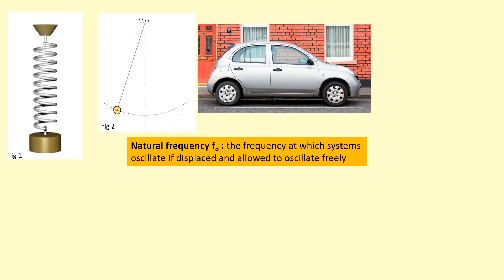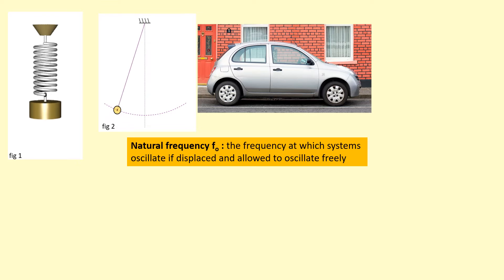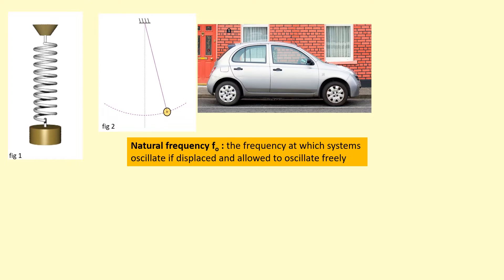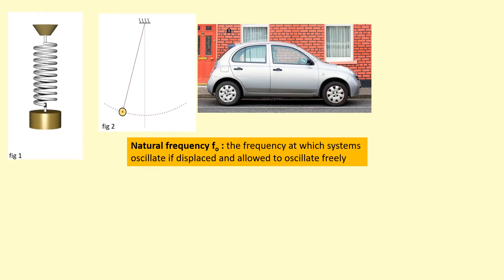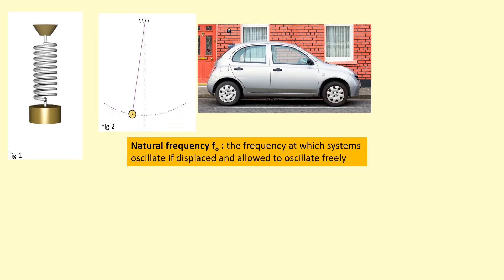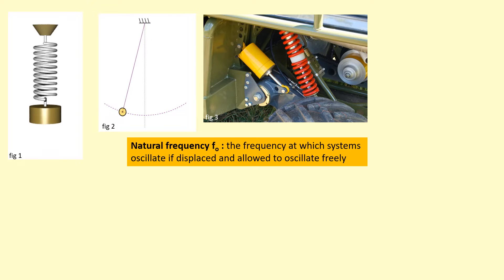So everything has a natural frequency at which it oscillates. For example, this car — if I come along and I push this car, it will oscillate up and down at some natural frequency, and that natural frequency is going to be determined by the stiffness of the suspension and the mass of the car.